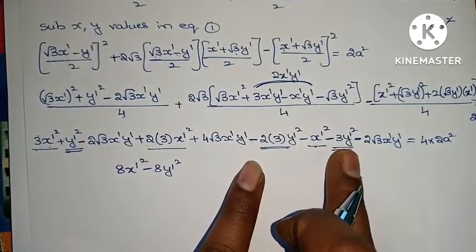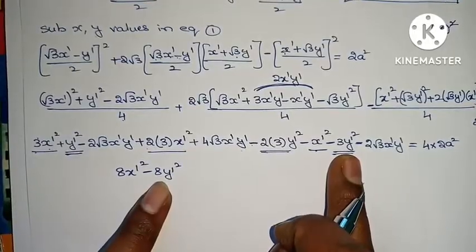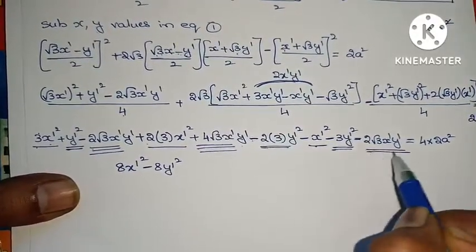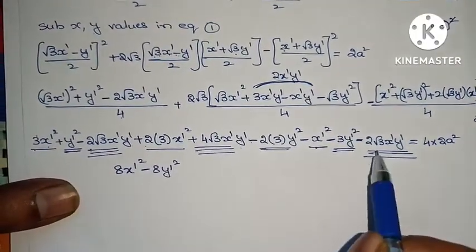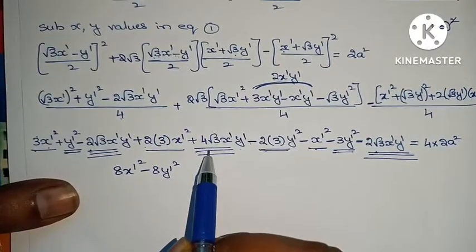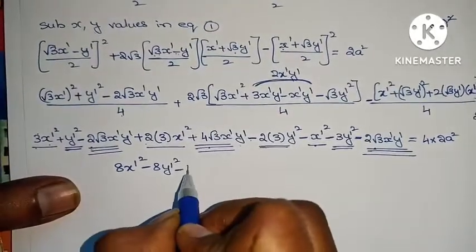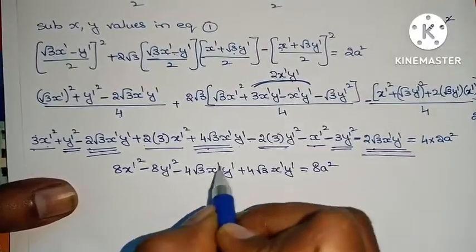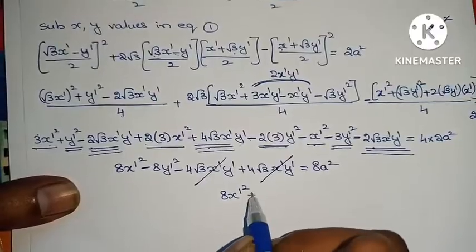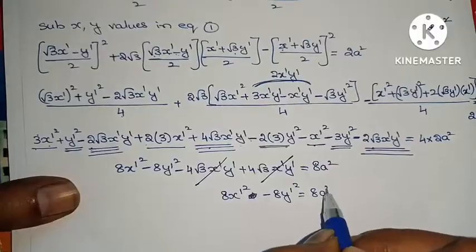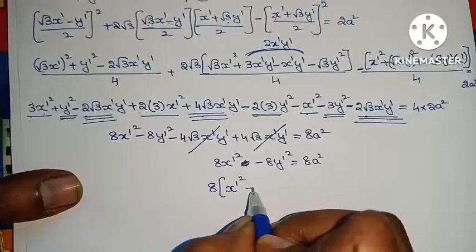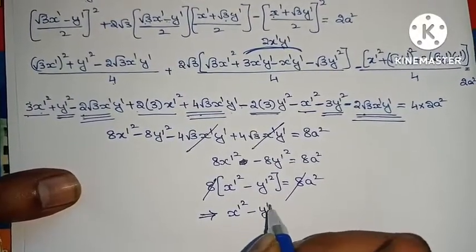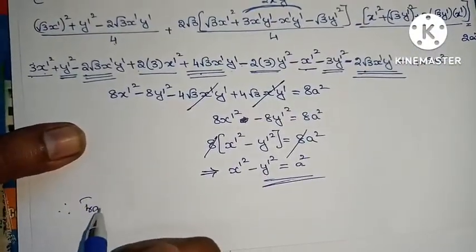After simplification: 6 minus 6 is 0, minus 3, minus 9 plus 1 is minus 8. The cross terms: minus 2 root 3 x dash y dash plus 4 root 3 x dash y dash minus 2 root 3 x dash y dash — these all cancel. That leaves 8 x dash square minus 8 y dash square equals 8a square. Factor out 8: x dash square minus y dash square equals a square. Therefore the transformed equation is x square minus y square equals a square.